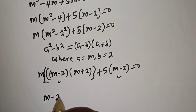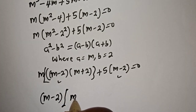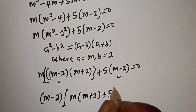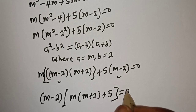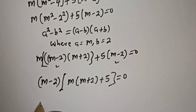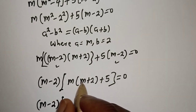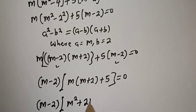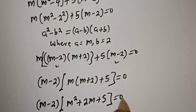m minus 2, multiplied by m times m plus 2, plus 5, is equal to 0. Expanding: m minus 2 multiplied by m squared plus 2m plus 5 is equal to 0.